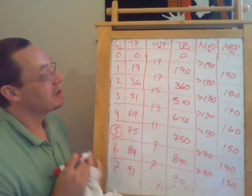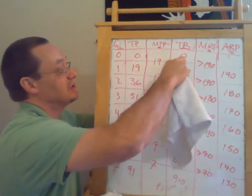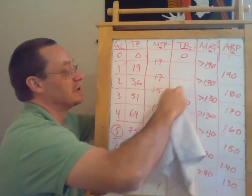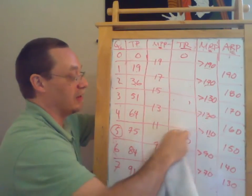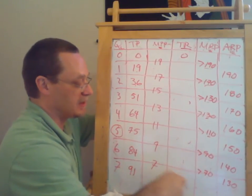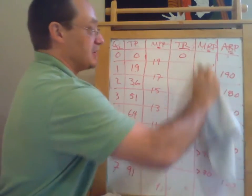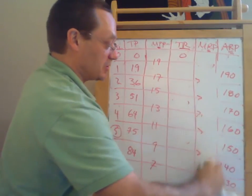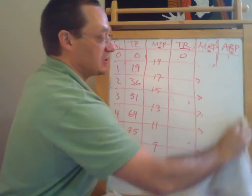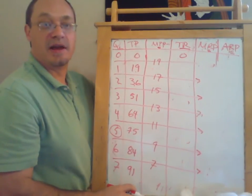Let's see what happens if the price of the output changes. Suppose the price drops from $10 to $5 — actually, that's going to make none of the workers profitable to hire if the wage stays the same. So let's instead suppose that the price of the output drops to $8.